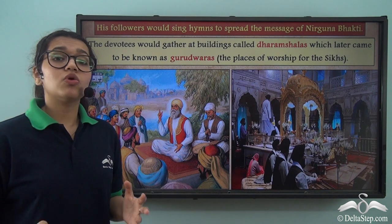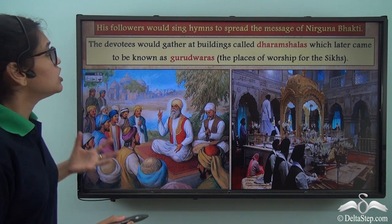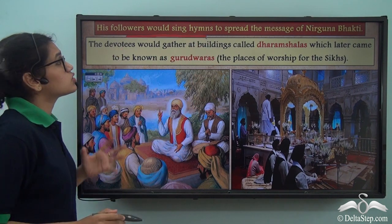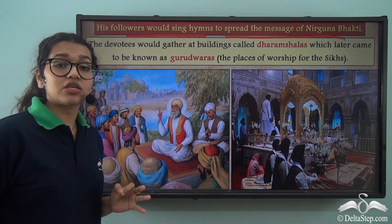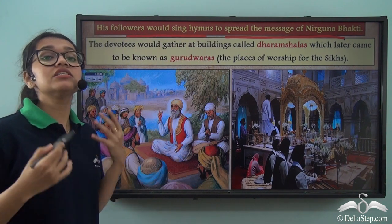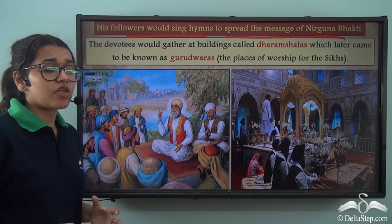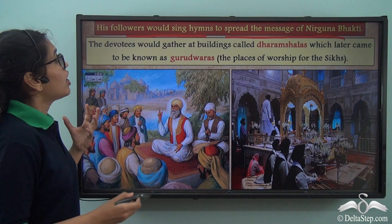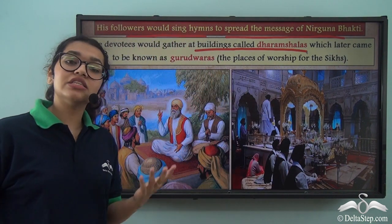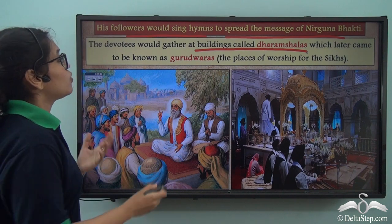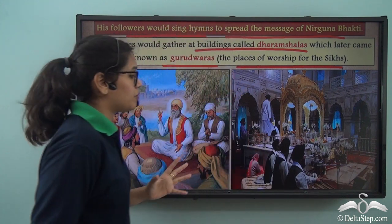What you just heard is known as Shabad Kirtan, or devotion — these are the most emotional hymns or songs that the Sikh people sing. They sing this to spread the message of Nirguna Bhakti, the fact that God is formless. His devotees would gather in buildings known as Dharamshalas. Later on, these buildings came to be known as Gurudwaras, which are the places of worship for the Sikh people.